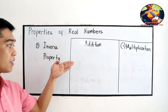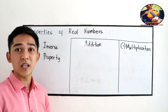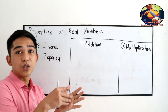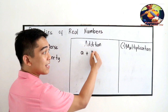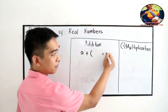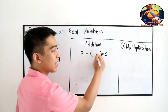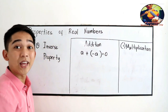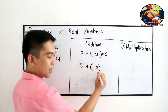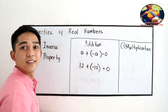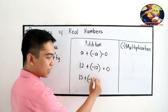The next property is the inverse property, starting with addition. For the inverse property of addition, what do you add to a number so that the sum equals 0? You add its opposite — its negative value. So A plus (−A) equals 0. For example, 12 plus (−12) equals 0, and 15 plus (−15) equals 0.